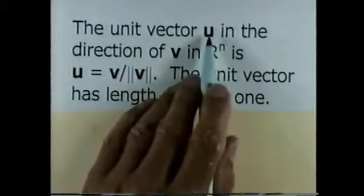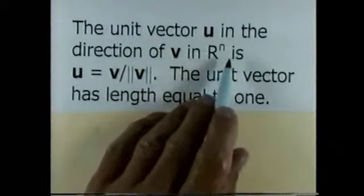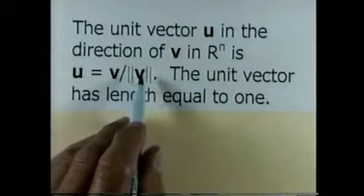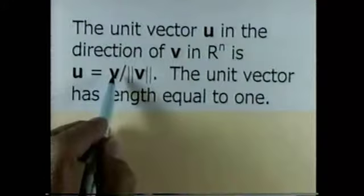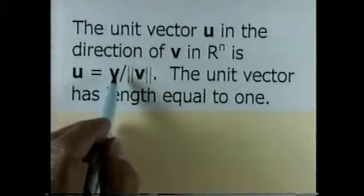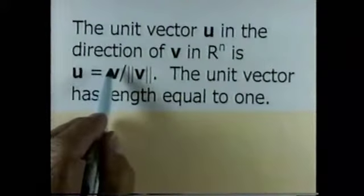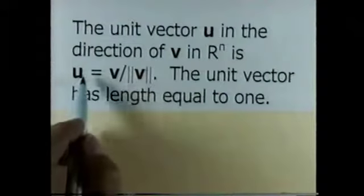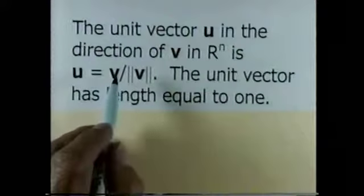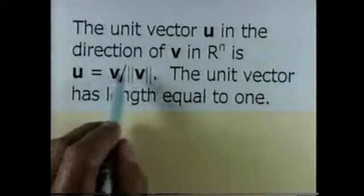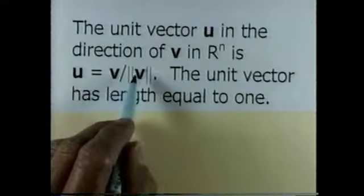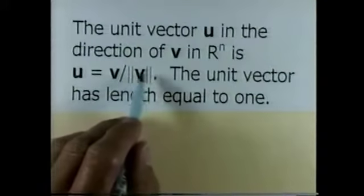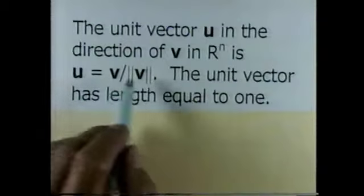The unit vector u in the direction of v in n-space is u equal to v divided by the magnitude of v. A unit vector has length equal to 1. V has both magnitude and direction. By saying u equals v divided by the magnitude of v, I am dividing the length component by its magnitude, so that equals 1, the length ends up being 1, and the direction is still that of v. The magnitude of v is a scalar, so when I divide by it I am multiplying by 1 over the scalar — the direction stays the same and the length becomes 1.